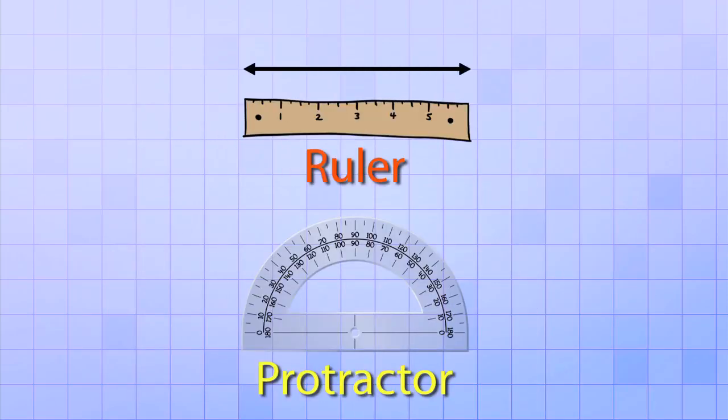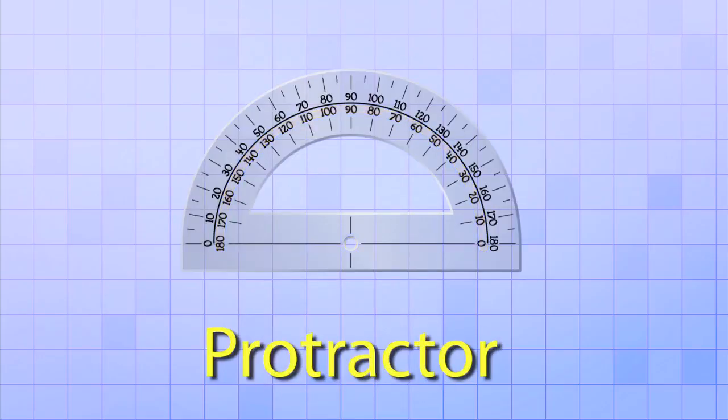A protractor is similar to a ruler, but it's curved into a half circle so that it can measure rotation around an axis point. A protractor also has a straight edge with a hole or a dot in the middle that represents the axis or center of rotation.